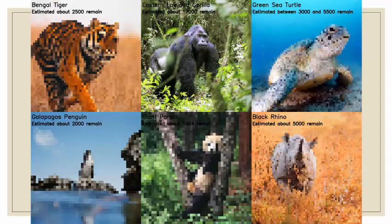Looking worldwide, this image represents each remaining individual in the wild as one pixel — the more distorted the image, the fewer individuals exist. Species shown include the Bengal tiger, the eastern lowland gorilla, the green sea turtle, the black rhino, the giant panda, and the Galapagos penguin — all of which are pretty severely endangered.